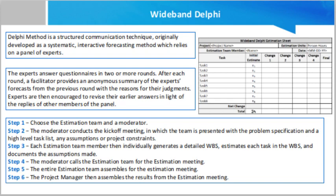Step 6.1 — the project manager compiles the individual task lists and their corresponding estimates into a single master task list. Step 6.2 — he also combines the individual lists of assumptions. Step 6.3 — he then reviews the final task list with the estimation team.